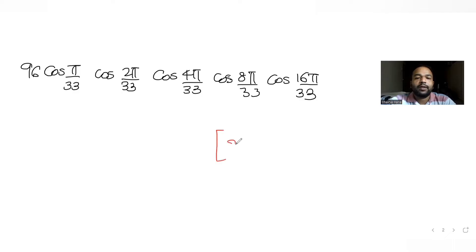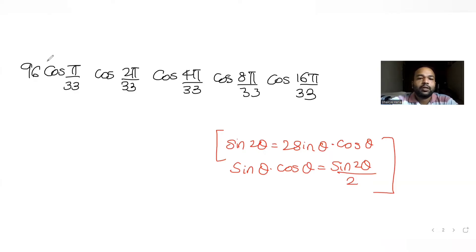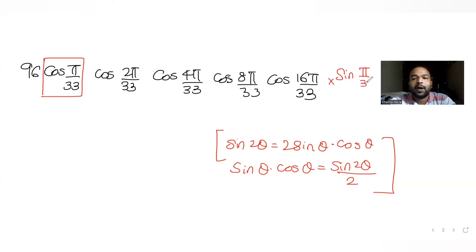The first step: I'll use the identity sin(2θ) = 2·sin(θ)·cos(θ), which means sin(θ)·cos(θ) = sin(2θ)/2. To apply this, I need a sin(θ) term, so I'll multiply both sides by sin(π/33).